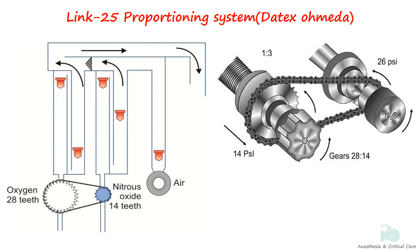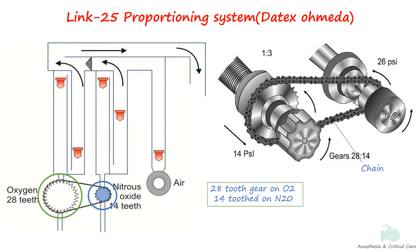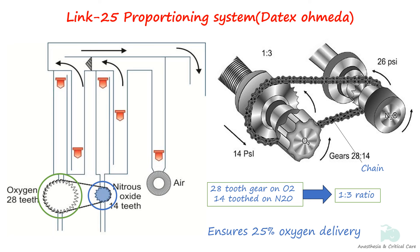The Link 25 system operates with two control knobs — one for nitrous oxide and one for oxygen — connected by a chain. The nitrous oxide knob has a gear with 14 teeth while the oxygen knob has a gear with 28 teeth, so for every two turns of the nitrous oxide knob, the oxygen knob completes one rotation. This design allows independent adjustment while ensuring a minimum oxygen-to-nitrous-oxide ratio of 1 to 3. If nitrous oxide flow exceeds 75%, the oxygen knob automatically adjusts to increase oxygen flow, maintaining 25% oxygen concentration. A significant decrease in oxygen flow results in a proportional reduction in nitrous oxide flow.